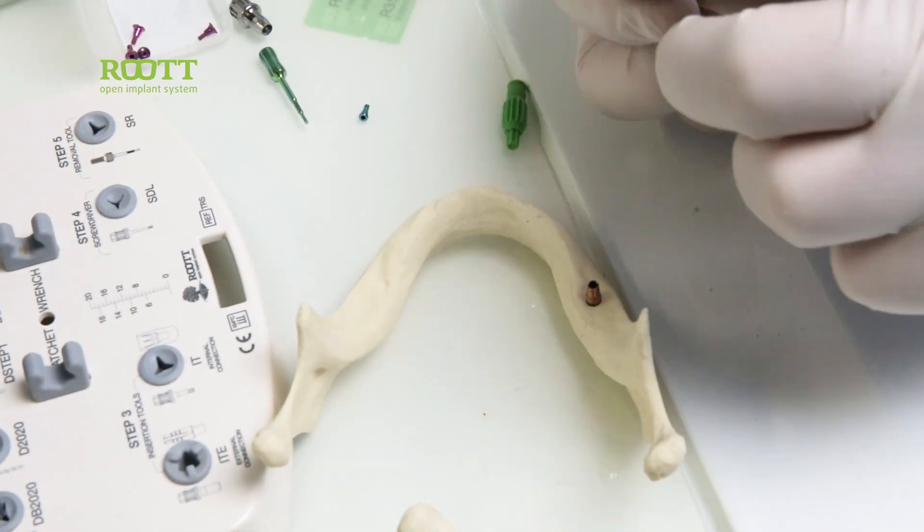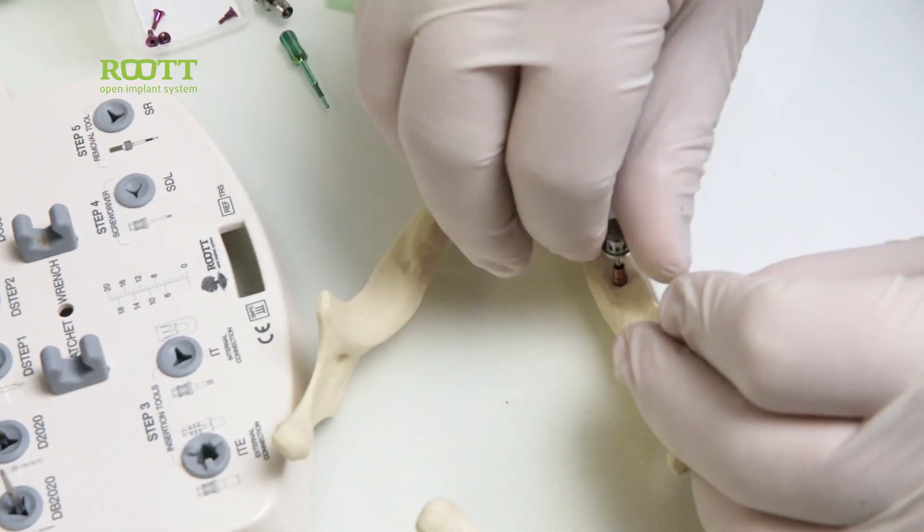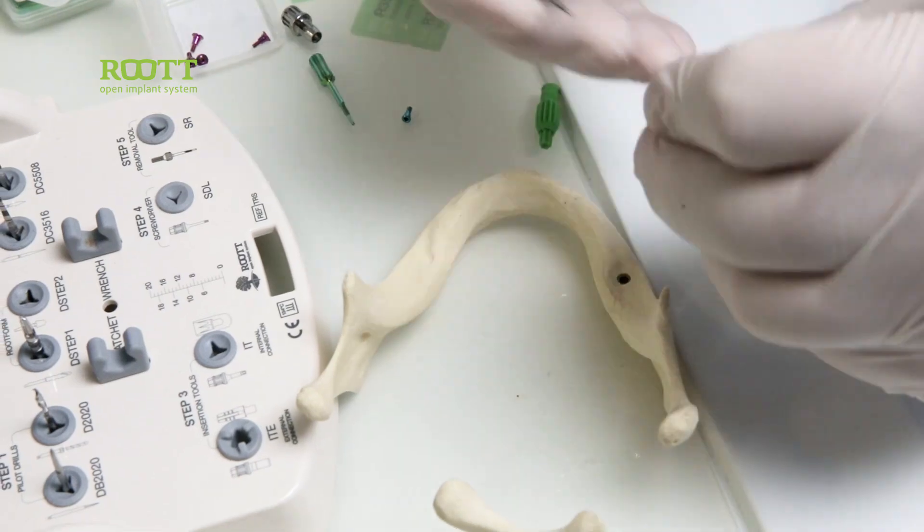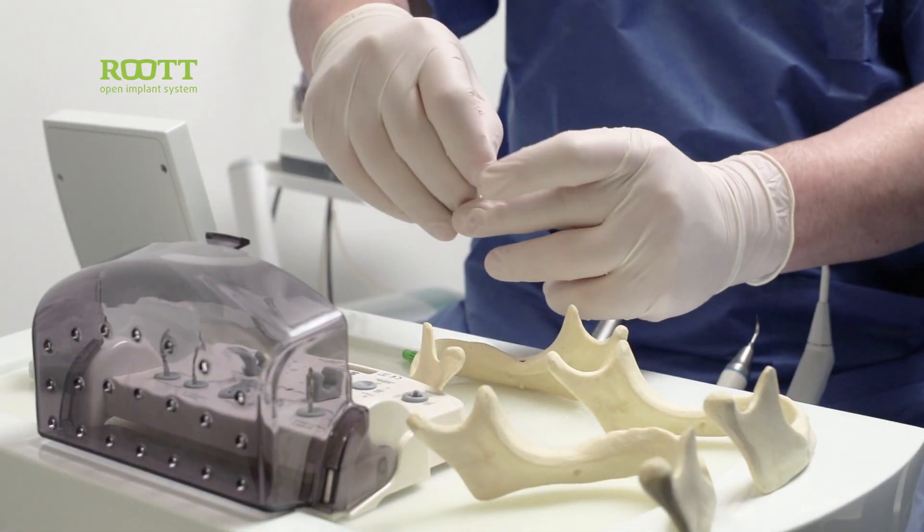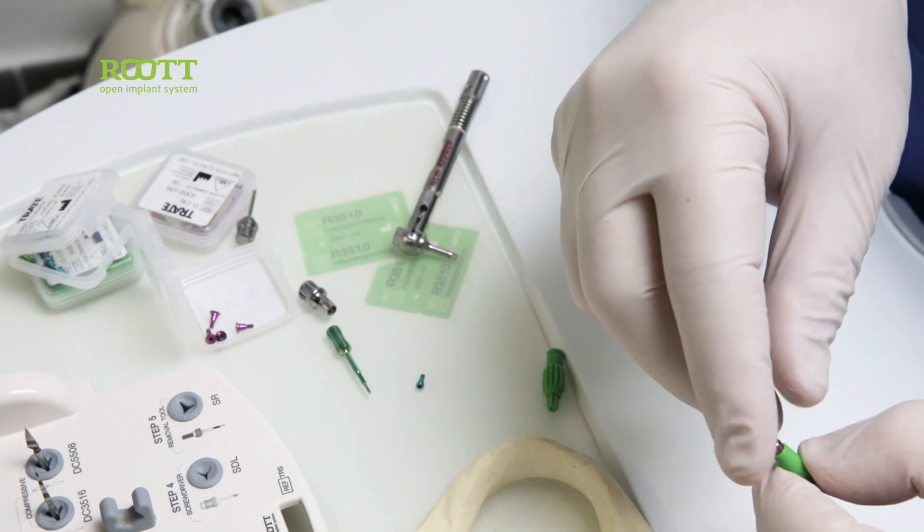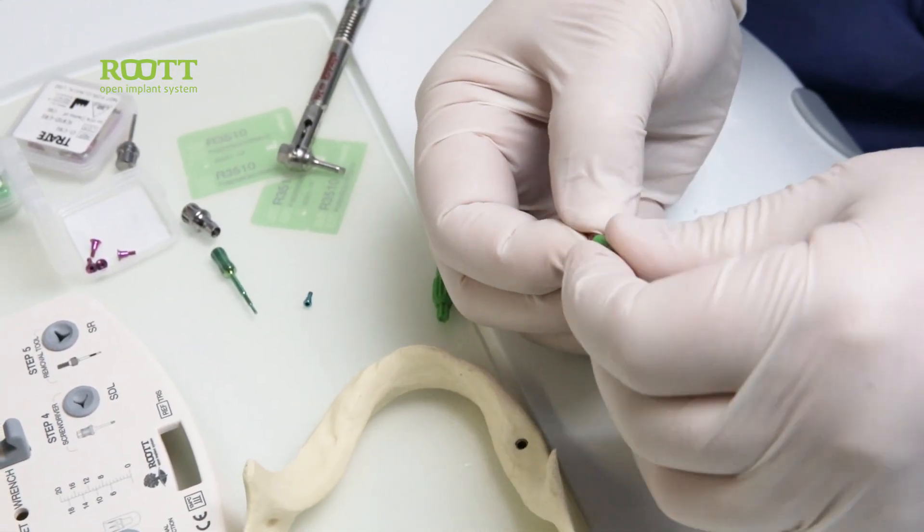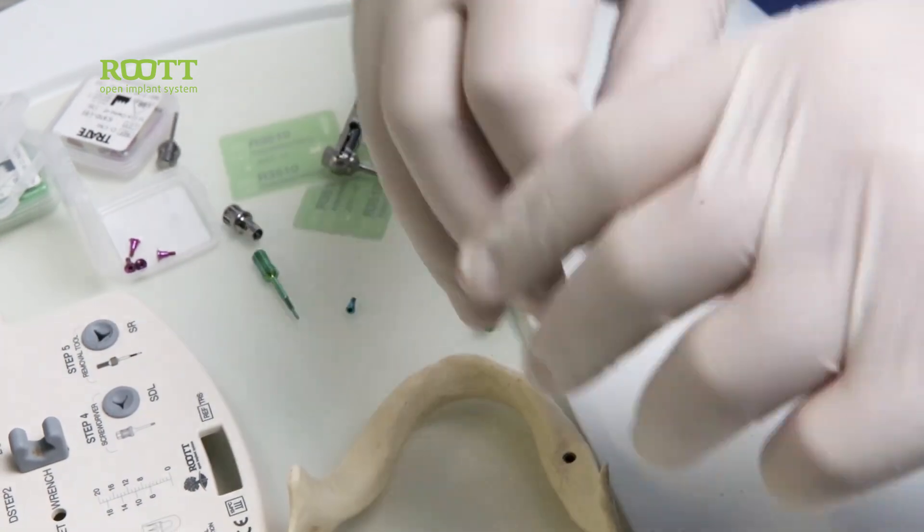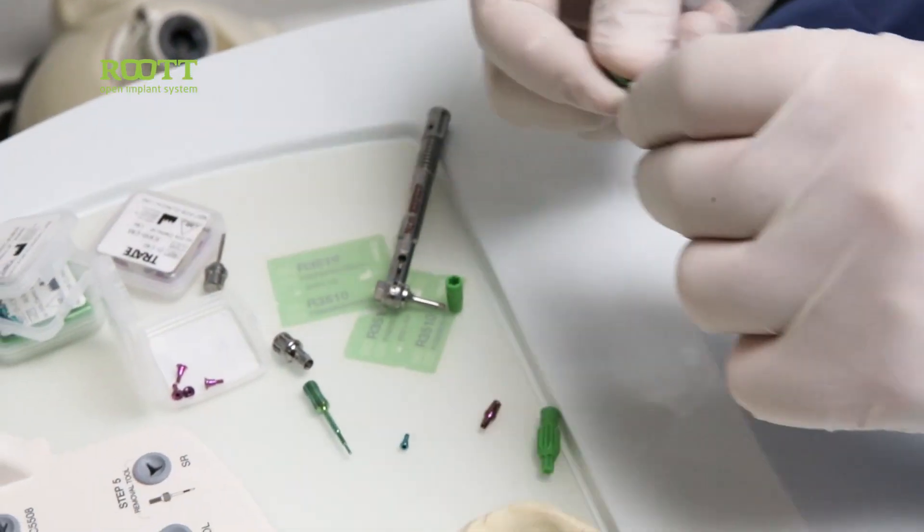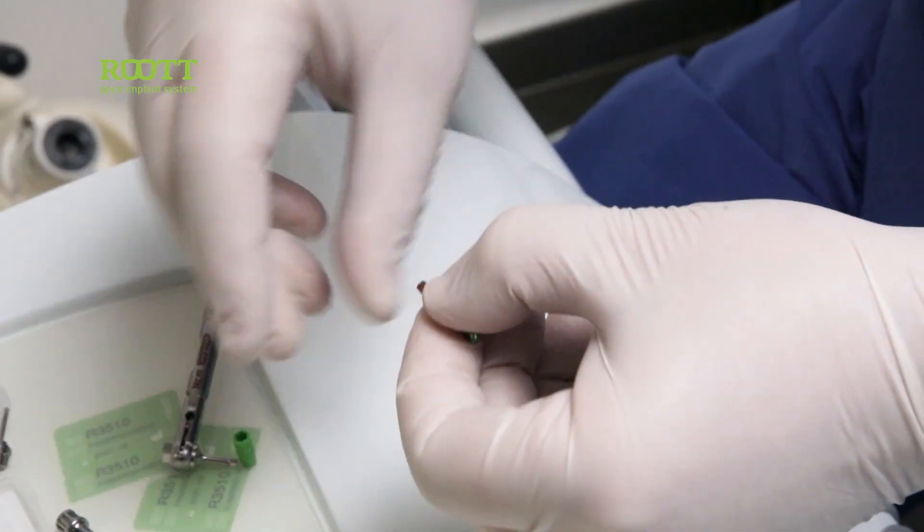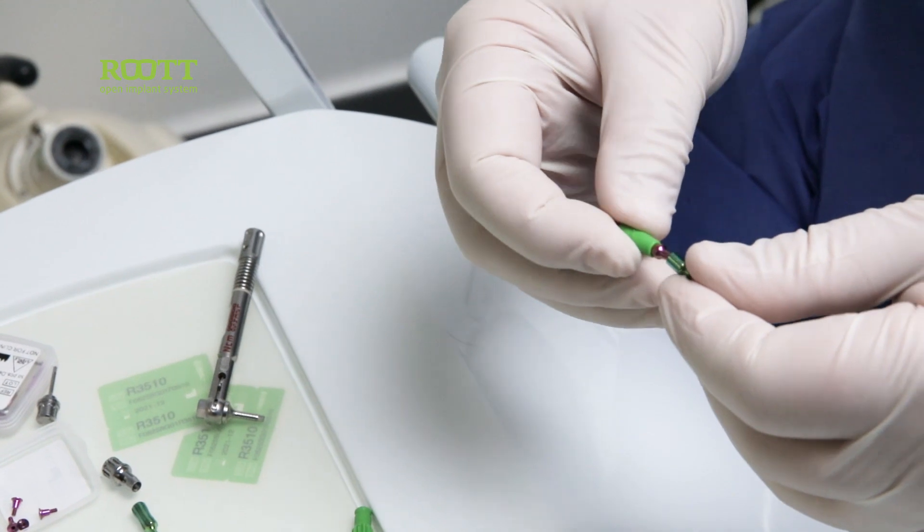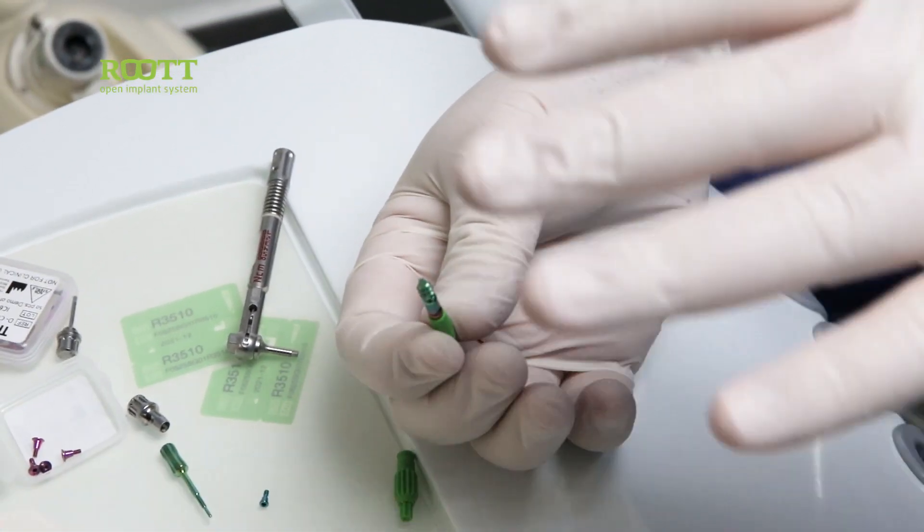Then we take out the abutment. We put it in the holder and we send the hole to the lab. The lab this way will make his cast and he will have already the abutment in his hand and he will build his crown. Here, the abutment, the implant. So when the lab receives this, he will fix the analog on it and he will make his cast.